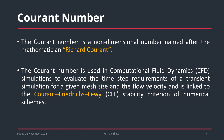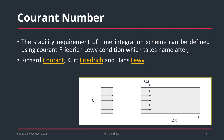The Courant number is used in computational fluid dynamics simulation to evaluate the time step requirement of a transient CFD simulation. Whatever mesh we are selecting or generating is linked to the Courant number, and based upon that, the stability of the numerical schemes is defined. The stability requirement of the time integration scheme can be defined using the Courant-Friedrich-Levy condition, named after Richard Courant, Kurt Friedrich, and Hans Levy.